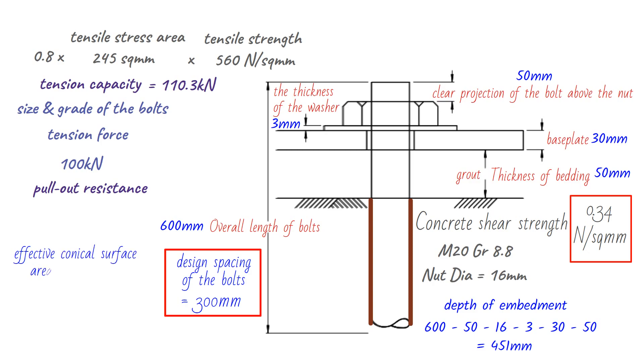The effective conical surface area for two bolts is 12,825.9 square centimeters, according to the BCS AHD Bolts document.